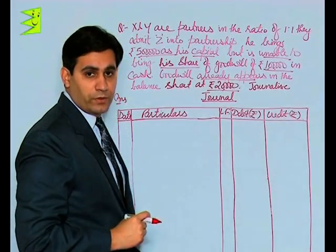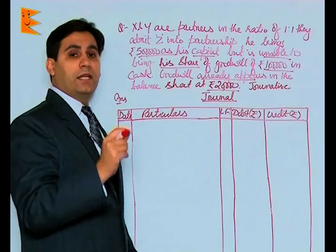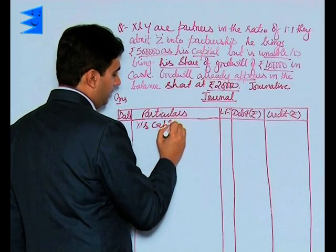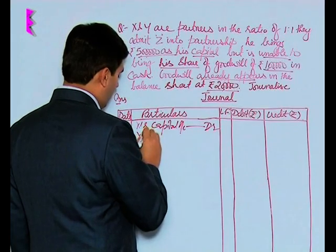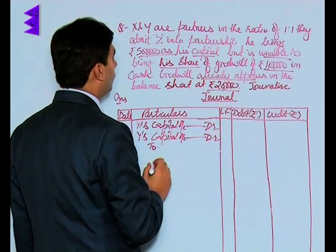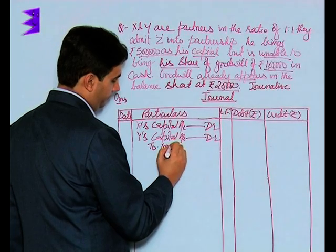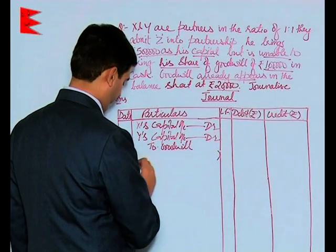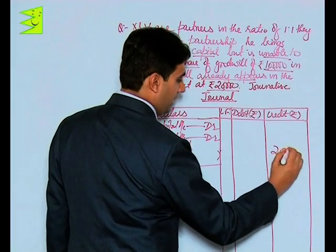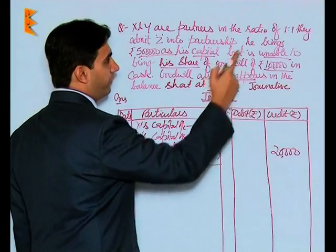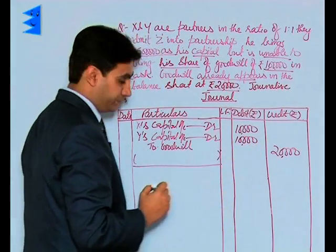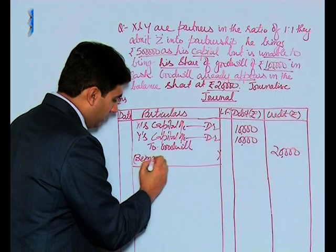Since goodwill is already appearing in the balance sheet at rupees 20,000, it must be written off among the old partners. The entry would be: X's capital account debited, Y's capital account debited, to goodwill — the amount of goodwill is 20,000. This would be written off in the old ratio of 1:1, so 10,000 each. Narration: being goodwill written off in old ratio.